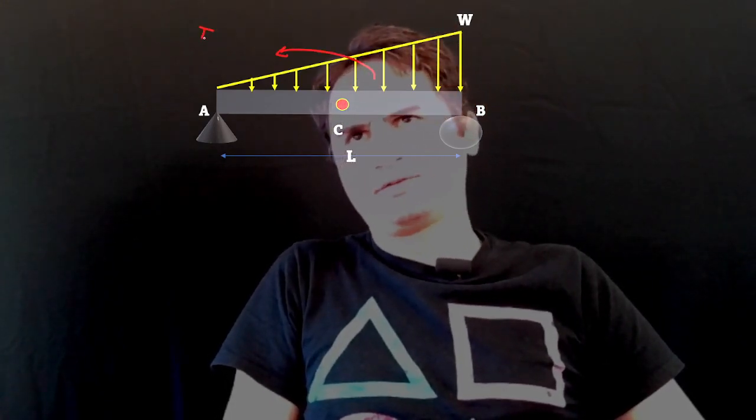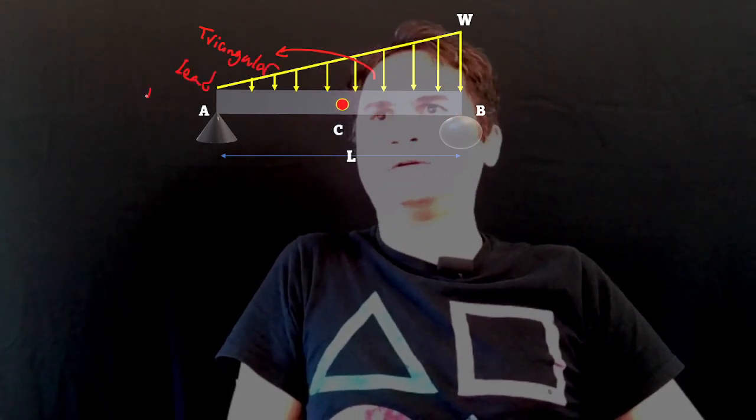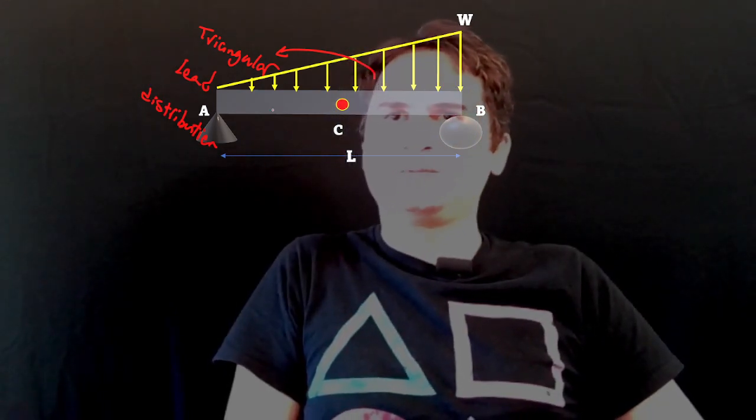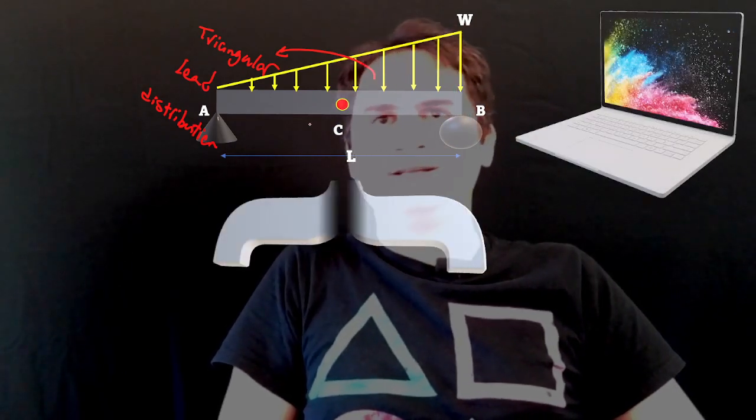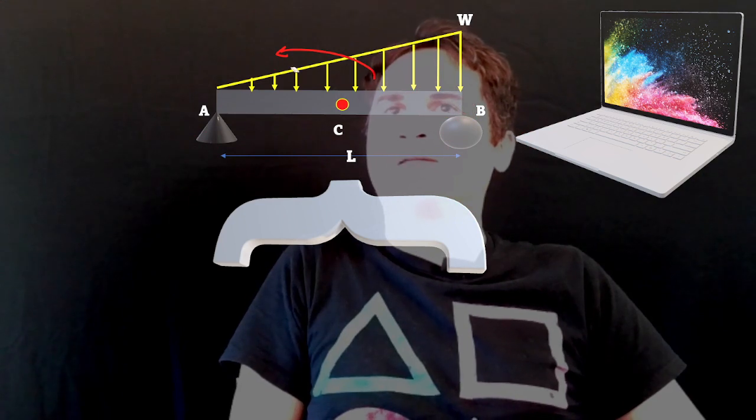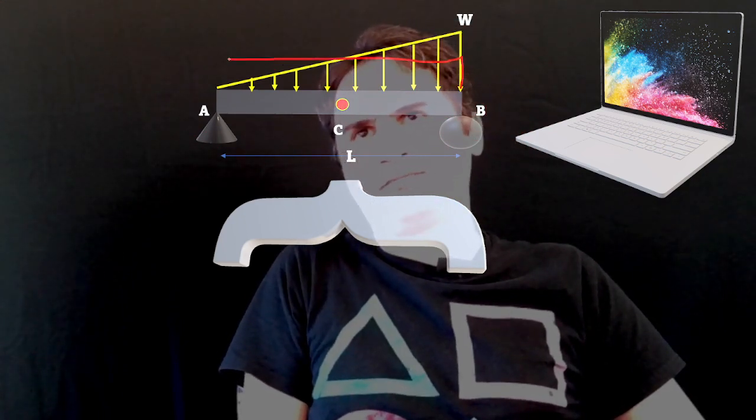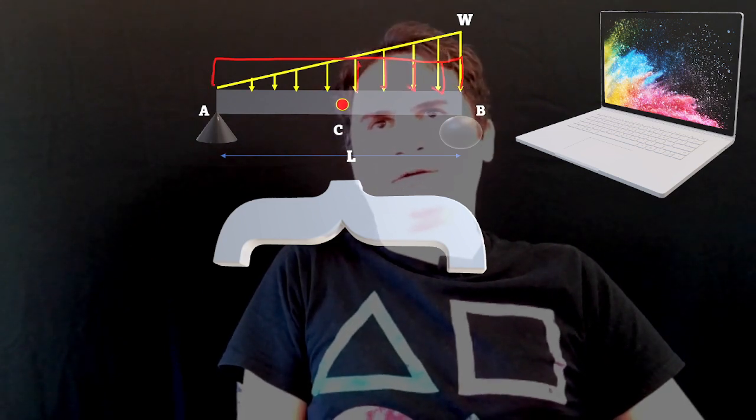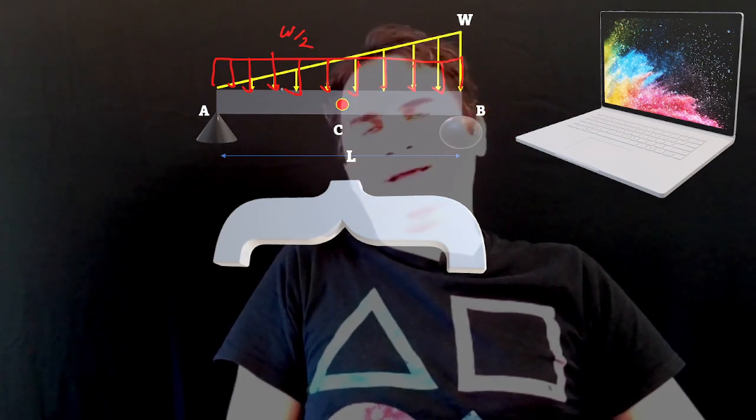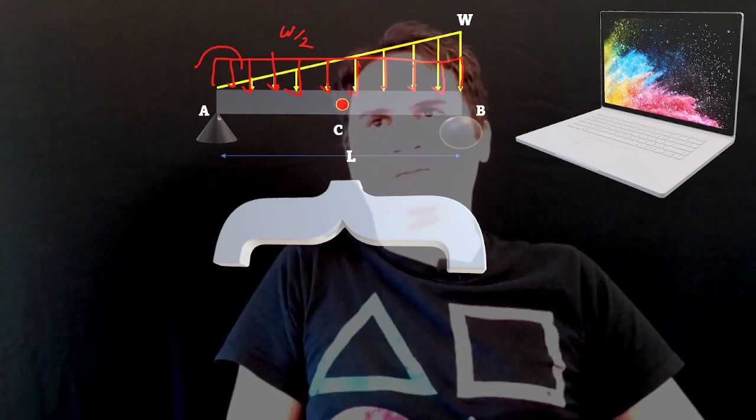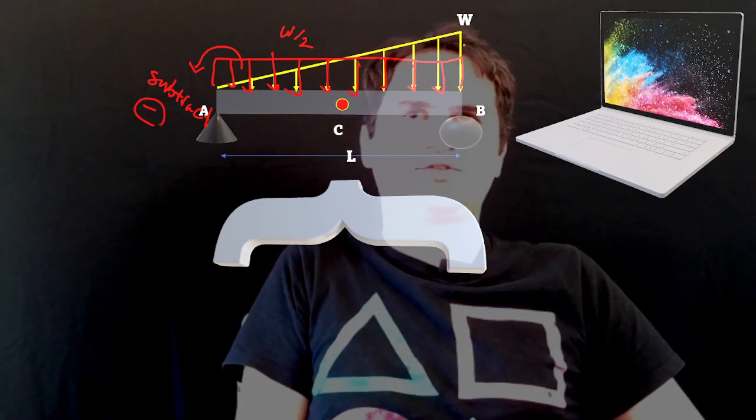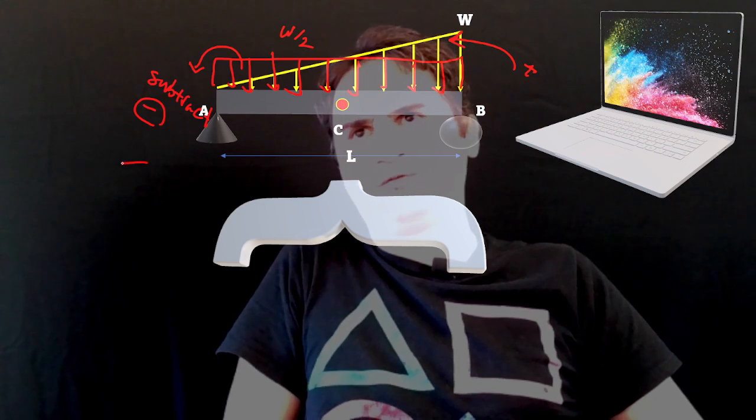If we have a triangular load distribution over a simply supported beam like what you can see here, you can easily divide it into sections. You can assume we have a rectangular distribution of W/2 all over the beam, and then we need to subtract part of this from the original. So we subtract a negative triangular portion from A to C at the center, and add this part.